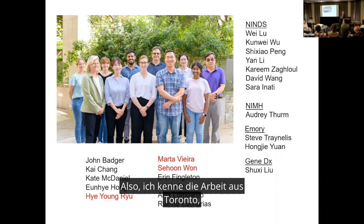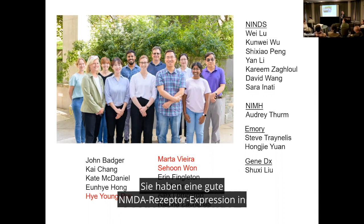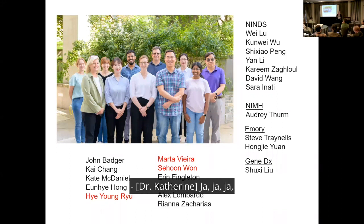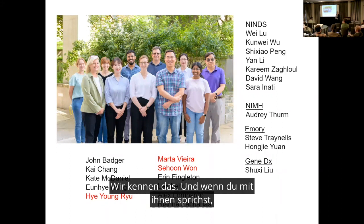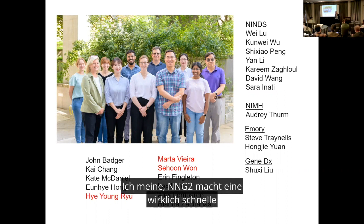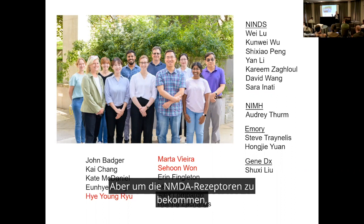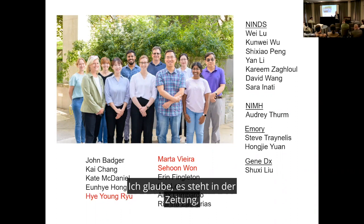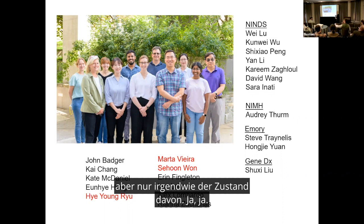Question from audience: The Toronto group got some good NMDA receptor expression in iPSCs — I think it was the Bhatt/Salter protocol. Response: Yes, we're familiar with that. Their protocol is longer — with NGN2 you get neurons faster, but to get the NMDA receptors you have to culture them a long time, and it's not so reliable. Sometimes you get expression, sometimes you don't — that's just kind of the state of it.